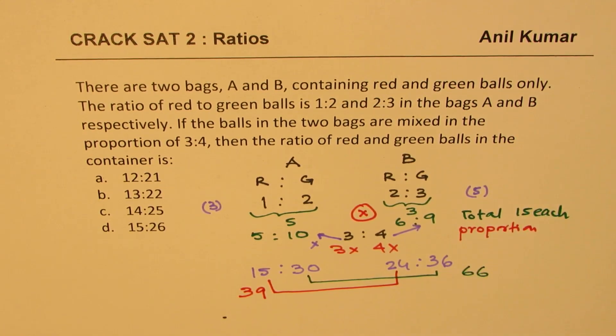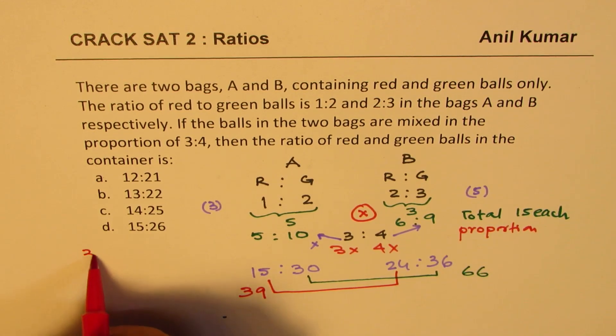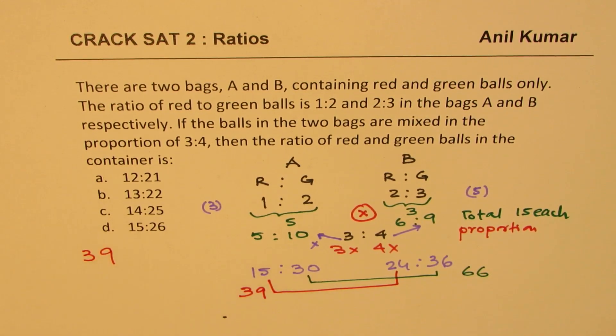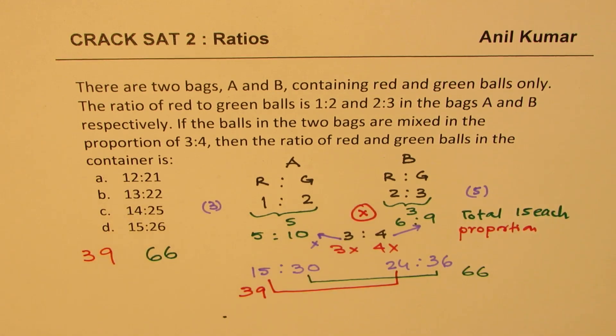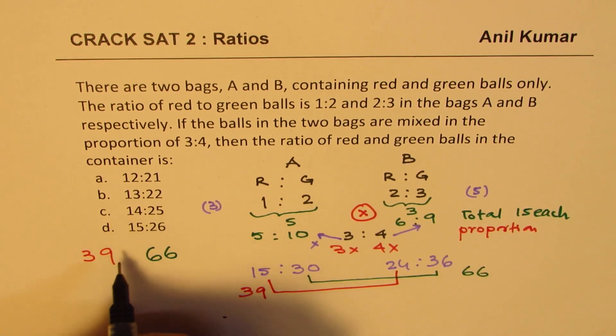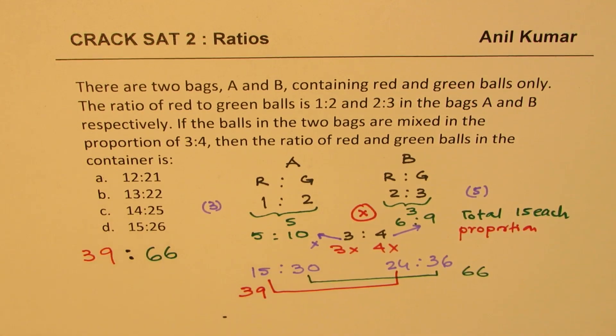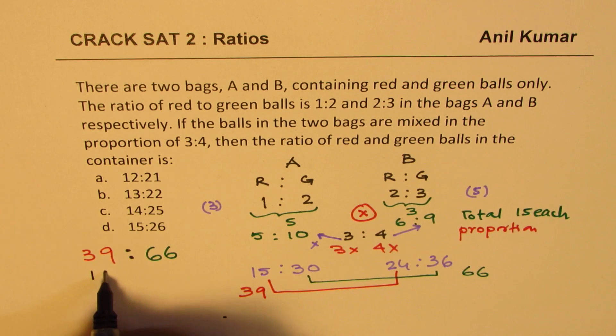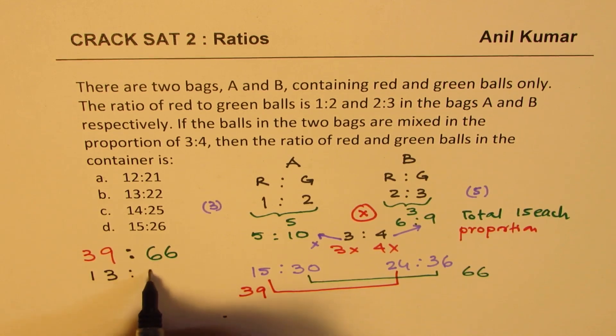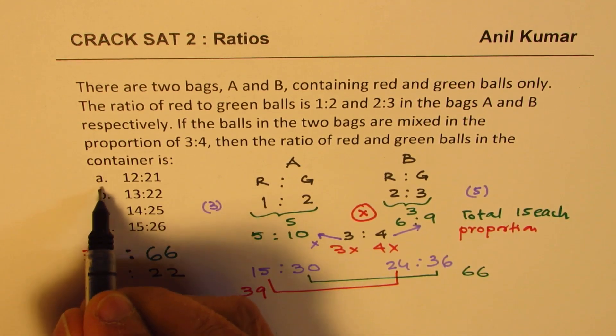So what we get here is a ratio of red and green balls as 39 is to 66. Does it make sense to you? So this is a very good way of understanding proportions and ratios. Now, the answers are given to us in simplified form. We can actually divide both sides by 3. So if I divide this by 3, we get 13 here and 22 there. So that is our option B.